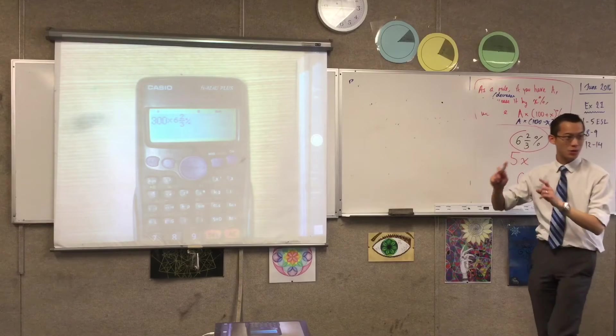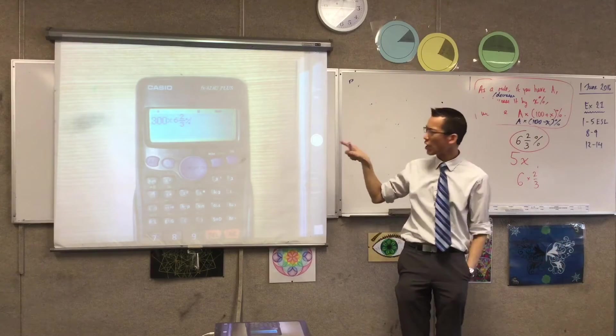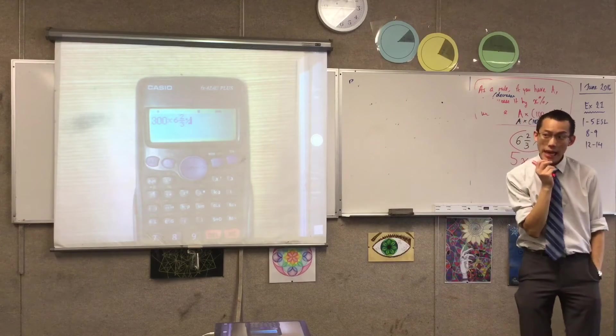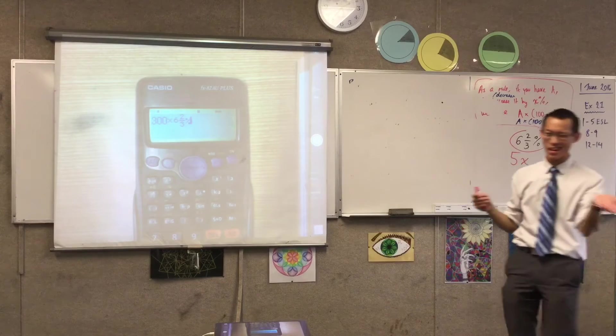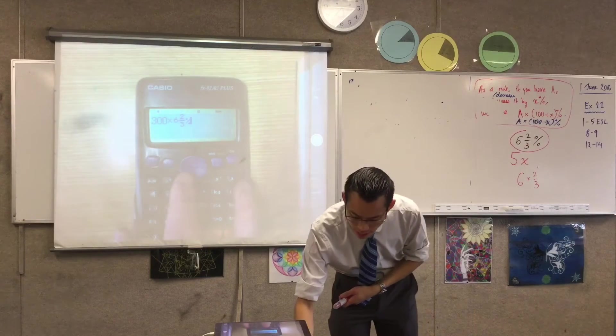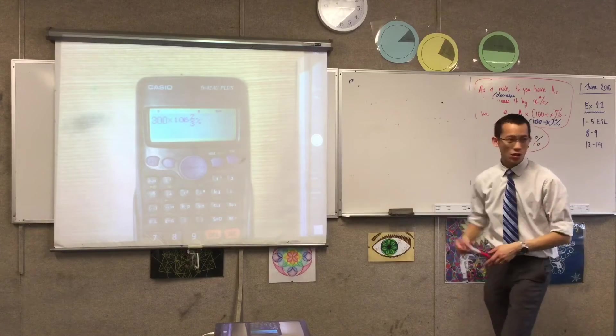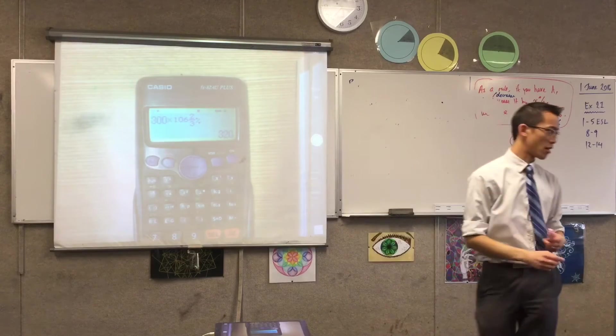But of course, I could do it all in one step, rather than doing change and then add it together. How would I change this line to give me the answer in one hit? Put in 106. Yeah, so I want the 6 and 2 thirds percent and the 100 percent at the same time. So what I'm going to do is put the 100 in. So once you've done that, this is that formula we developed before, you hit equals, and out pops your answer.